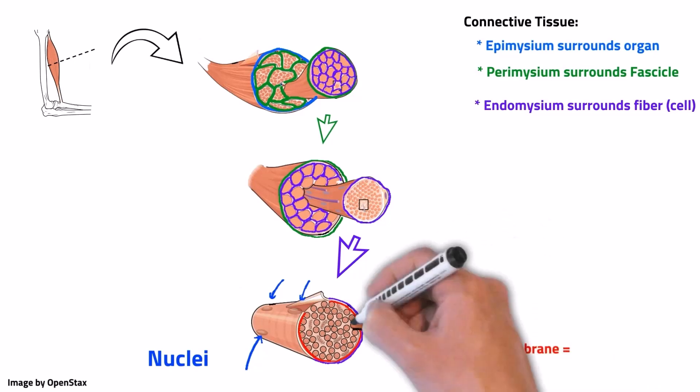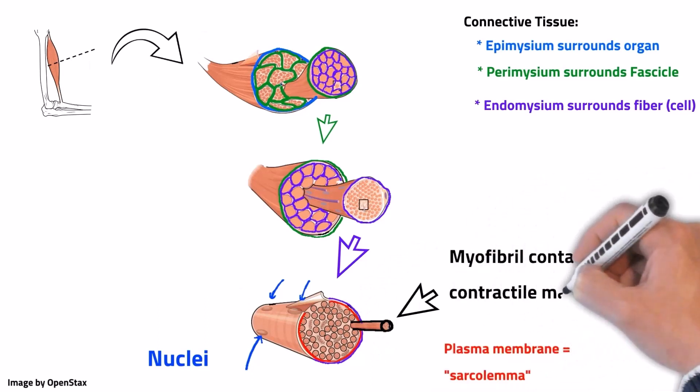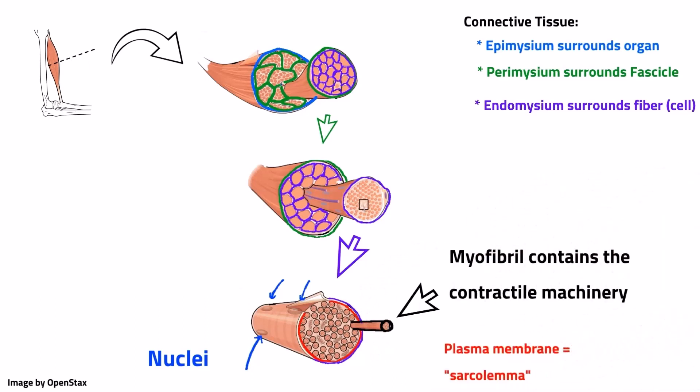Finally, we see a lot of structures called myofibrils organized lengthwise along the muscle fiber. The myofibrils contain the machinery that causes the muscle to shorten. We'll zoom in even further to see what this looks like.